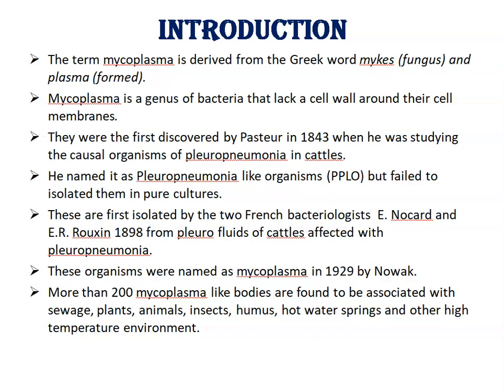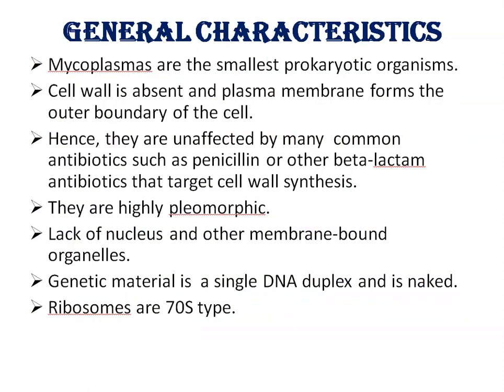More than 200 mycoplasma-like bodies are found to be associated with seaways, plants, animals, insects, humans, hot water supplements, and other high-temperature environments. Now, the general characteristics of mycoplasma.